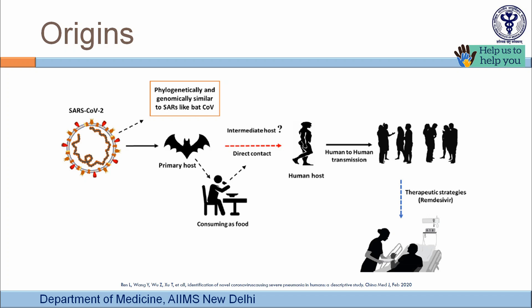For any coronavirus or other zoonotic disease to spread to humans, there has to be an intermediate host, or it can spread directly from bat to human. In this disease, the intermediate host is speculated to be a pangolin, but this has not yet been confirmed.